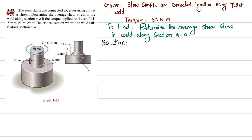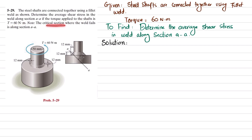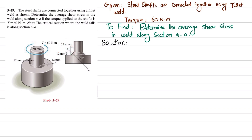Welcome back. Problem 5-29: steel shafts are connected together using a fillet weld as shown. Determine the average shear stress in the weld along section AA if the torque applied to the shaft is 60 newton-meters. The critical section where the weld fails is along section AA. This width is 12 millimeters and this height of the fillet weld is also 12 millimeters.